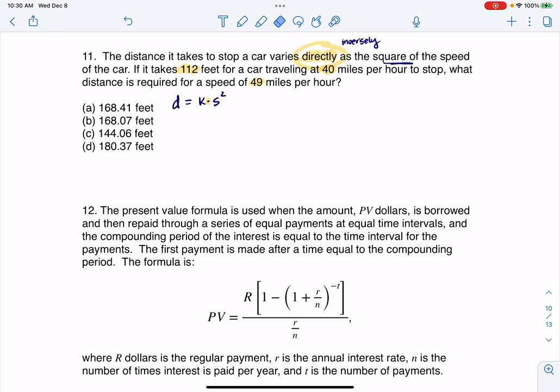So we've got direct and inverse, but this was direct. So I'm going to erase that work. And then once you set up your basic variation equation, you need to plug in the complete ordered pair to solve for K.